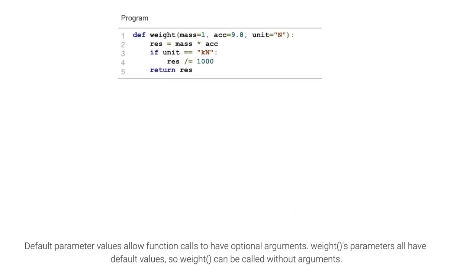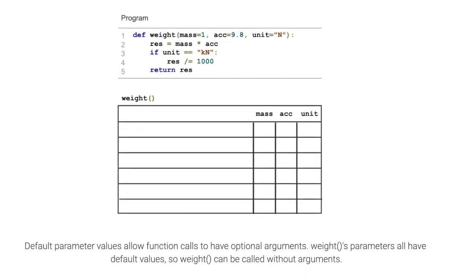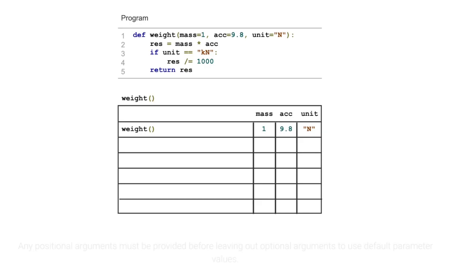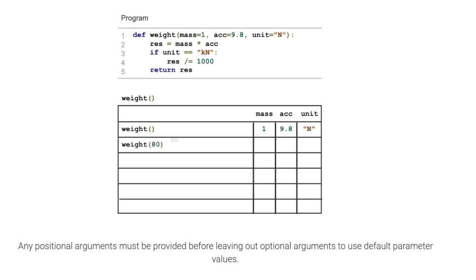Default parameter values allow function calls to have optional arguments. The weights function's parameters all have default values, so it can be called without arguments. Any positional arguments must be provided before leaving out optional arguments to use default parameter values.